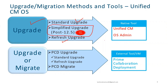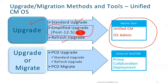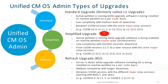To perform a standard, refresh, or simplified upgrade, you can use the Unified CMOS Admin tool — that is, opening Cisco Unified Communications Manager OS Administration. To upgrade, open Unified CMOS Admin, go to the dropdown menu, choose Cisco Unified CMOS Admin, and log in with admin credentials. For PCD upgrades or migration, we have standard and refresh upgrade via PCD, and PCD migrate. For this, you need an external tool — a VM called PCD, which is Prime Collaboration Deployment.